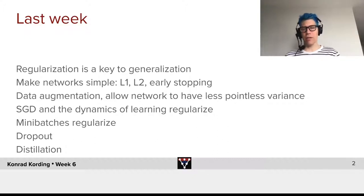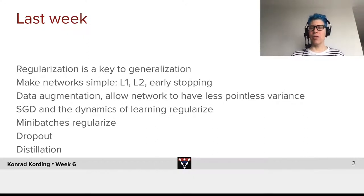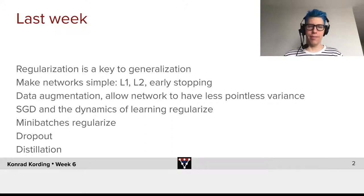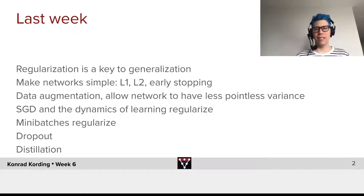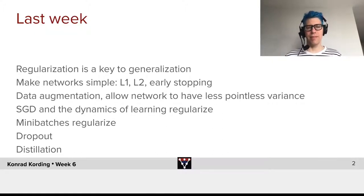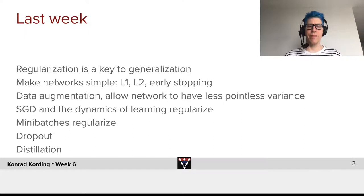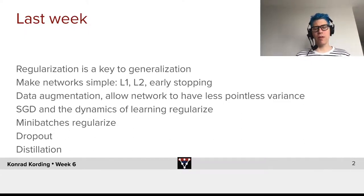We talked about data augmentation and how it can allow the network to have less variance that is not useful. We spoke about how stochastic gradient descent and the dynamics of learning can themselves regularize. We spoke about how mini-batches can help in regularization. And then we talked about dropout and how dropout is one of the commonly used regularization techniques.